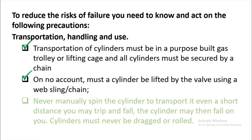On no account must a cylinder be lifted by the valve using a web sling or chain. The valve is the weakest point of the compressed gas cylinder — it is only made of copper with rubber fittings. If you handle the cylinder by the valve, the valve will bear the total weight of the gas and cylinder, and during transport it may rupture immediately.